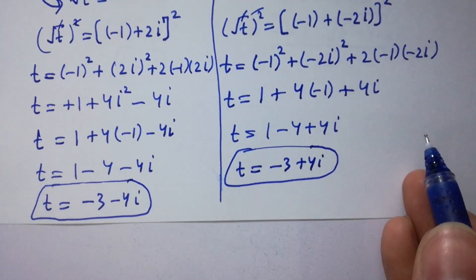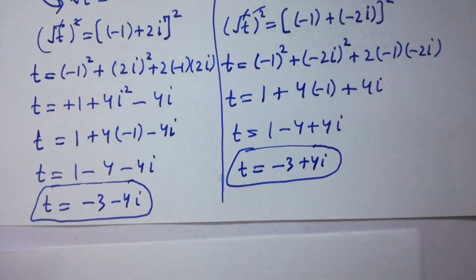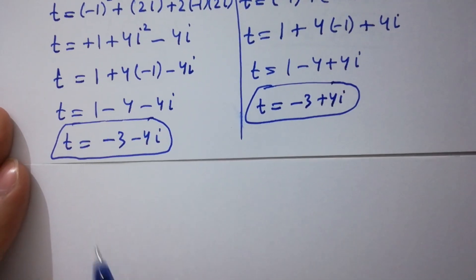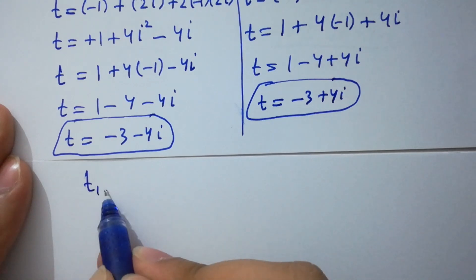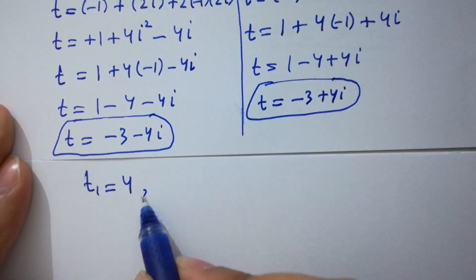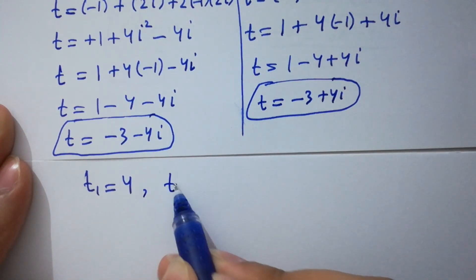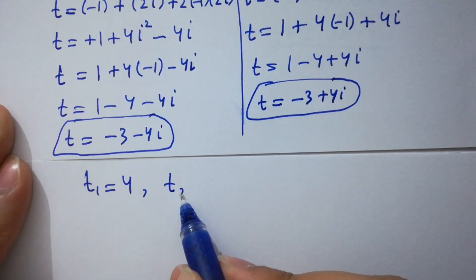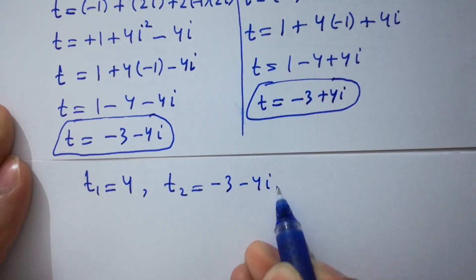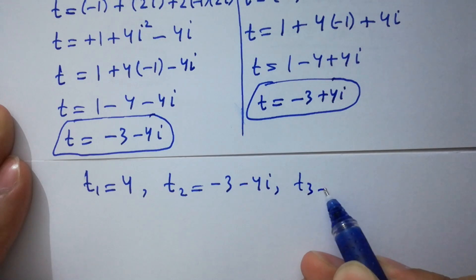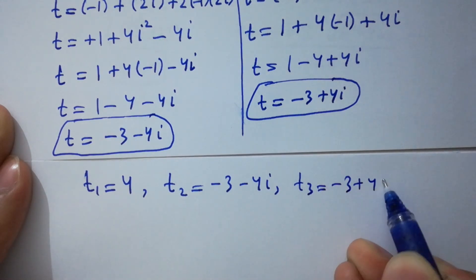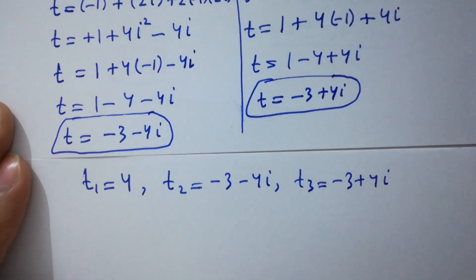So here we have t1 equals 4, t2 equals negative 3 minus 4i, and t3 equals negative 3 plus 4i.